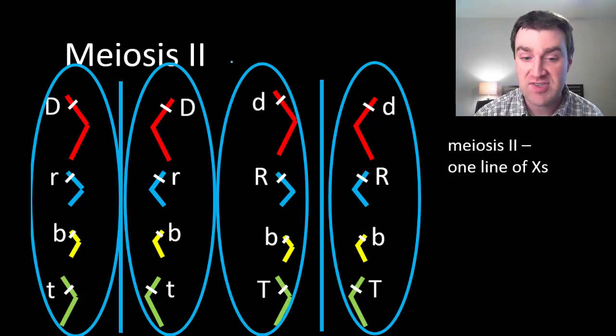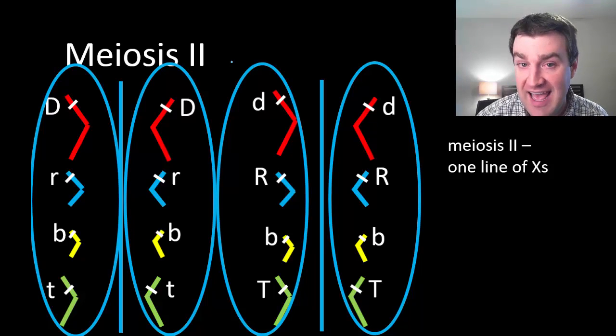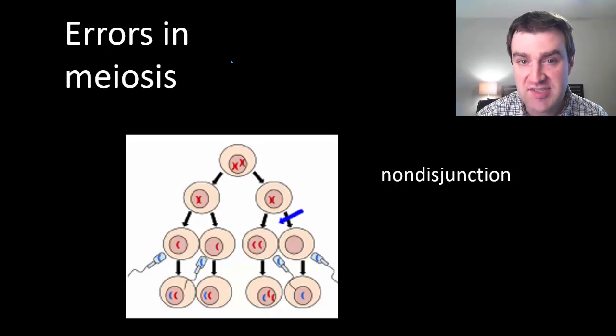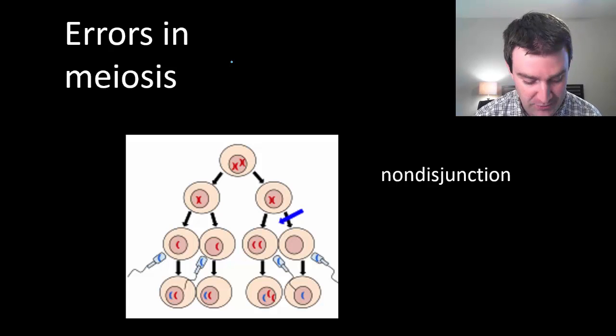So now we've got four separate cells. And I hope you'll notice if you look in each circle we've got a haploid set of chromosomes. Remember that we started with a diploid cell that had eight chromosomes in it. And now we just have four. And more importantly we have one of each. One red, one blue, one yellow, one green. So that's the general process of how you go from diploid to haploid.